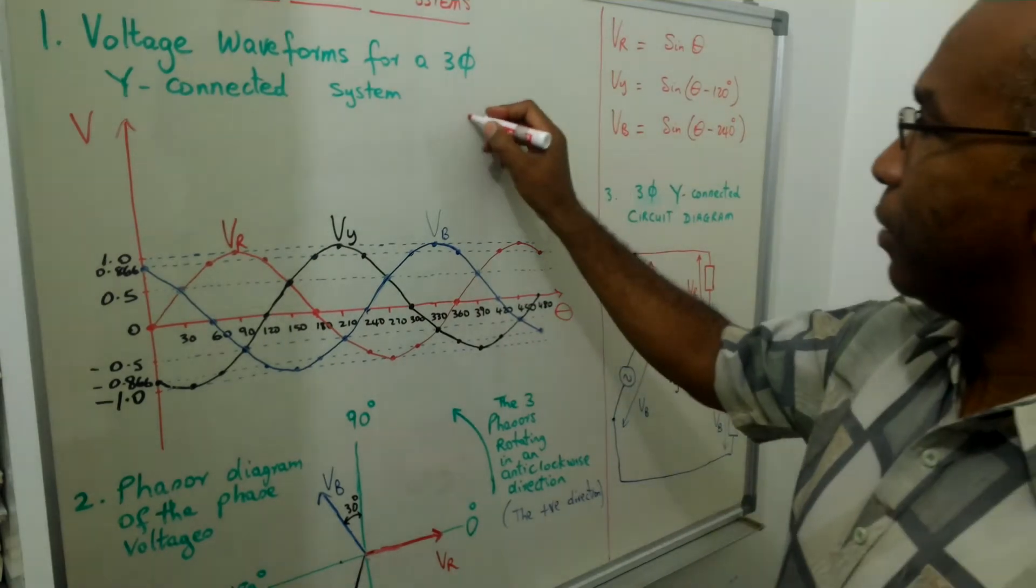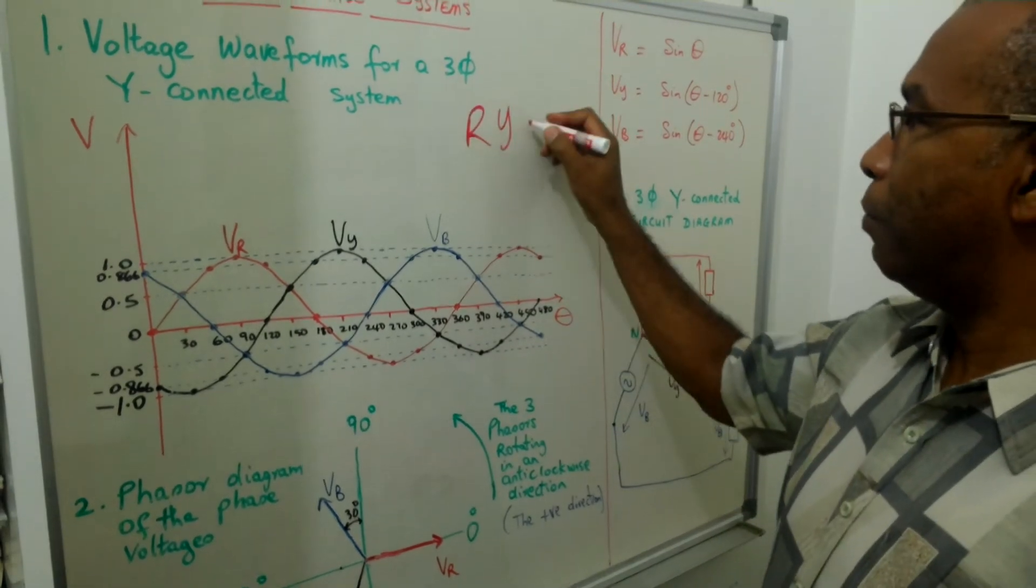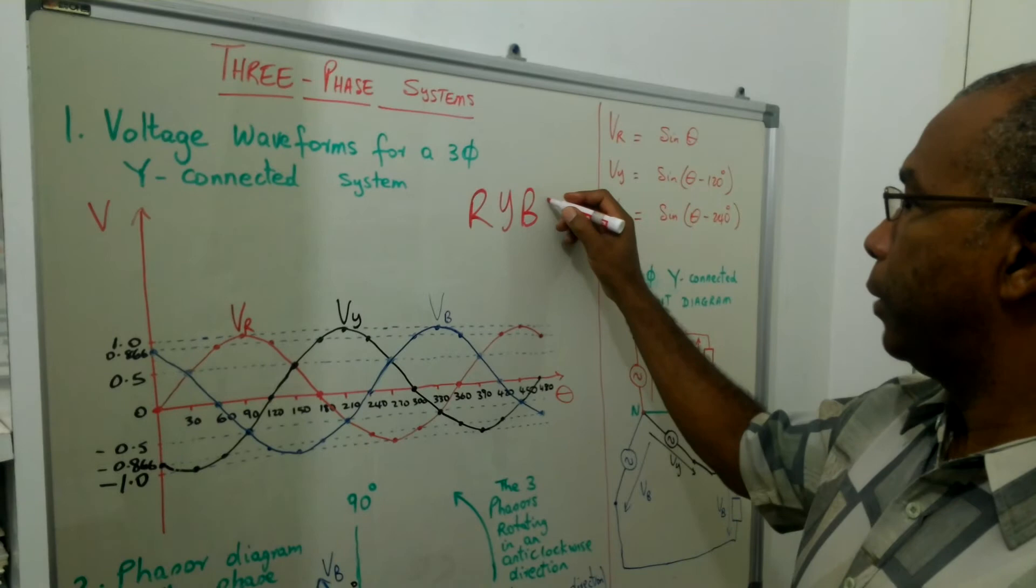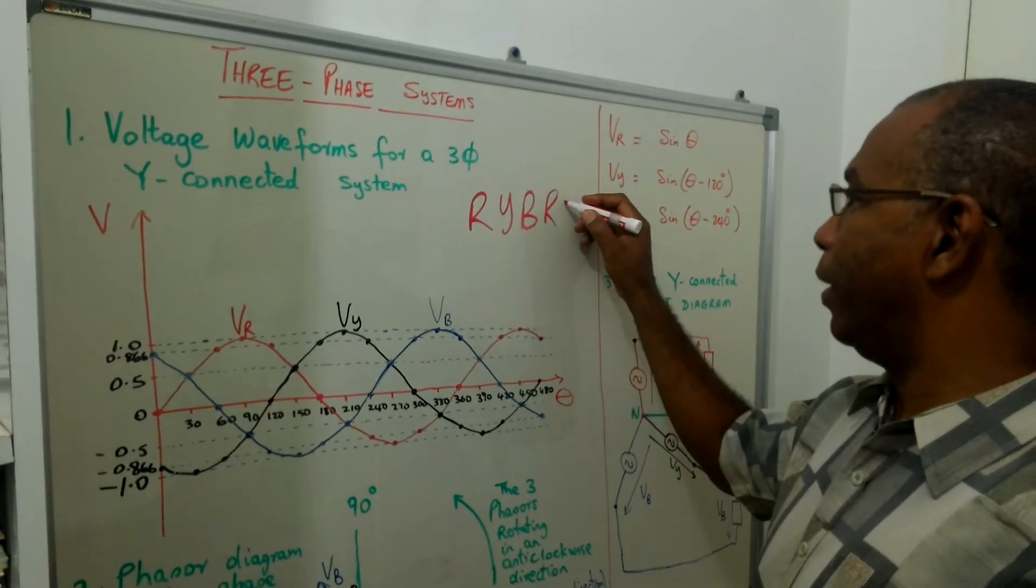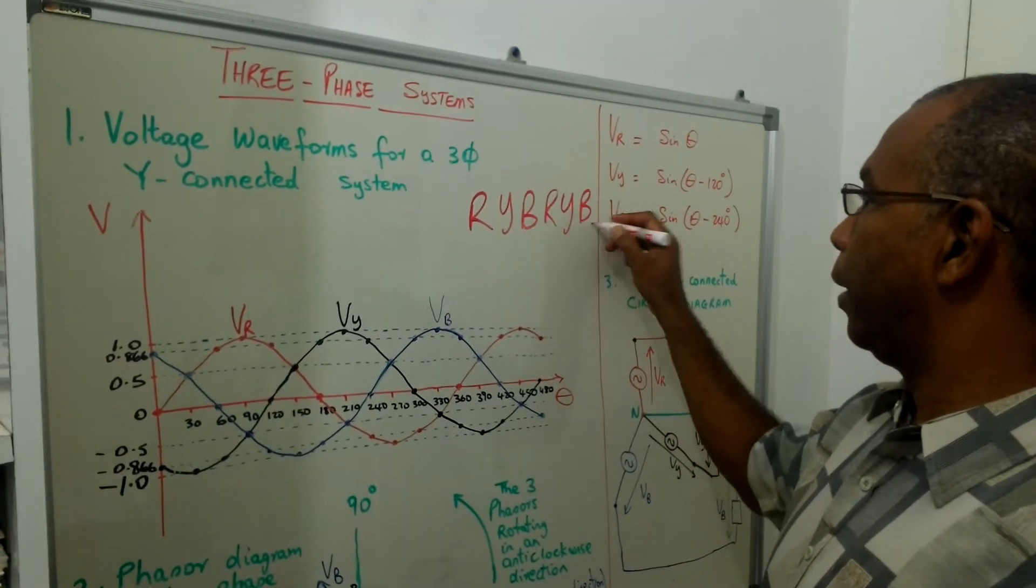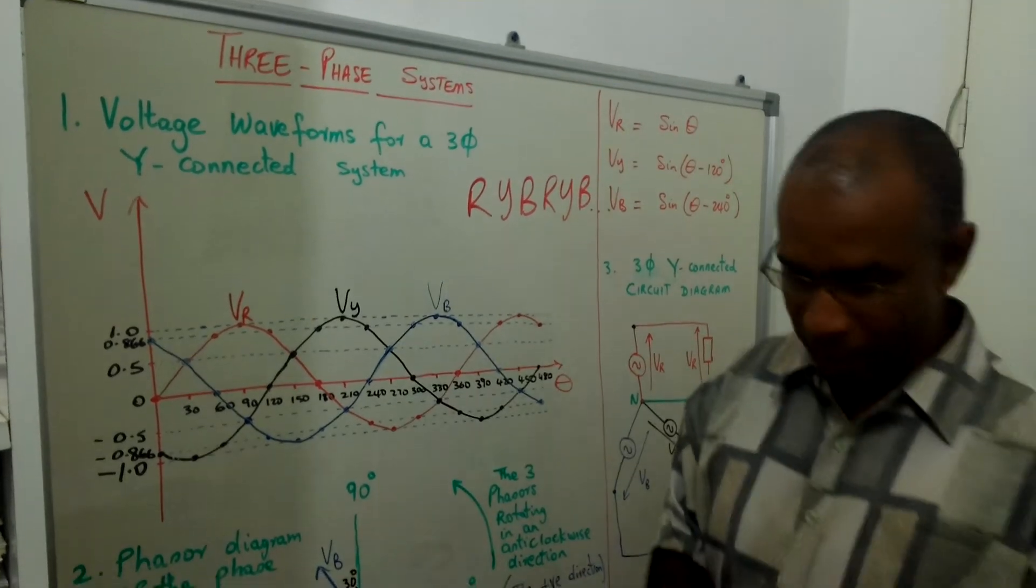Now the sequence is red, yellow, blue. And as long as the power is going on, you have red, yellow, blue. And it is going anti-clockwise.